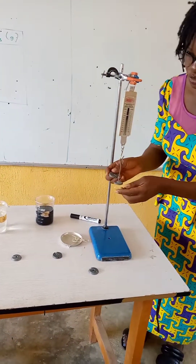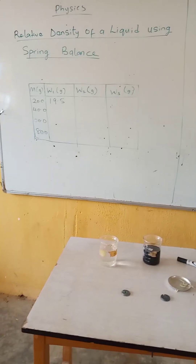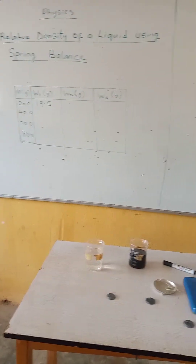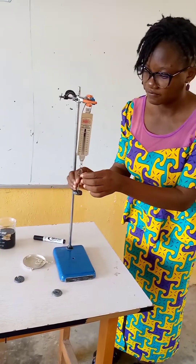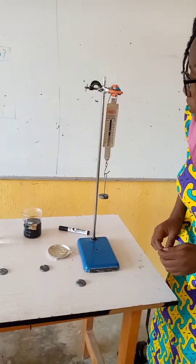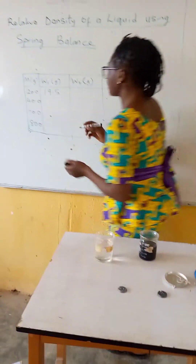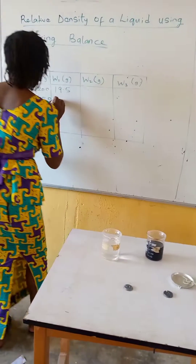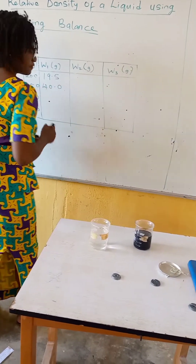If I add another 20 grams, I will have my 40 grams as requested from the question. We have 40 grams. Weight in air is equal to 40 grams.